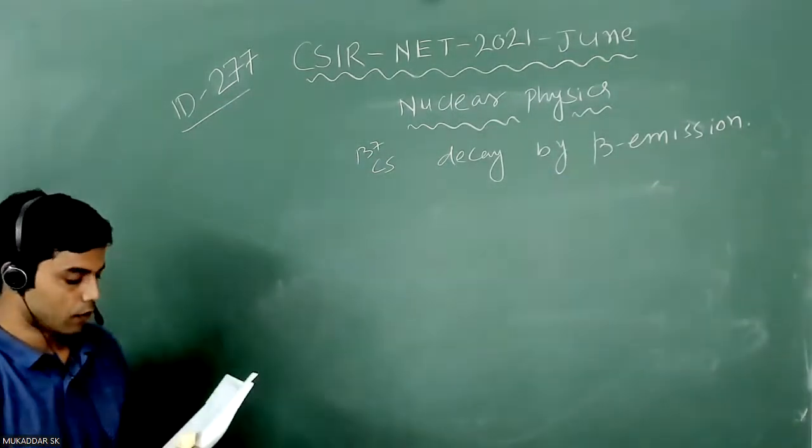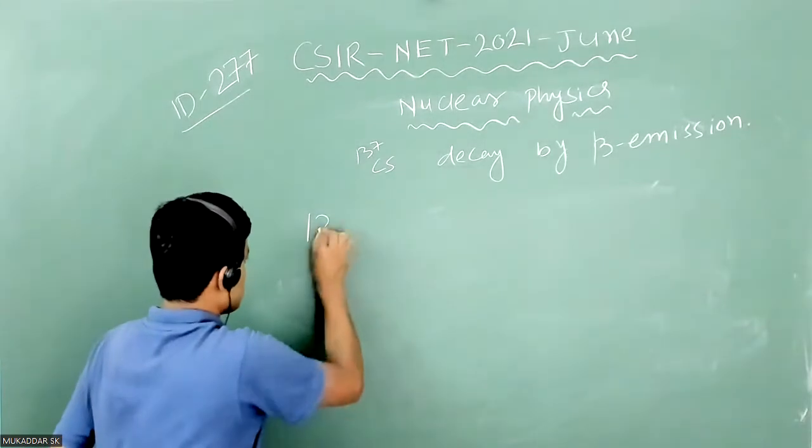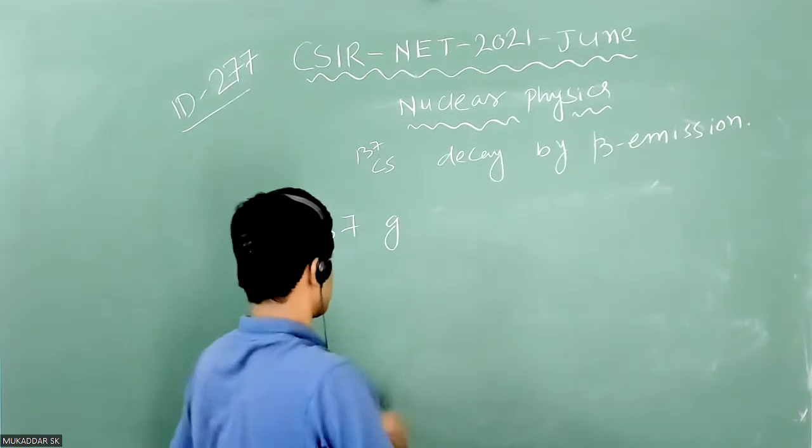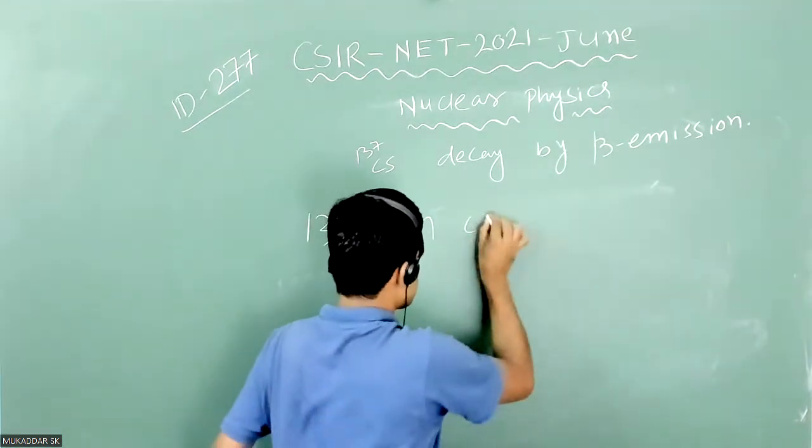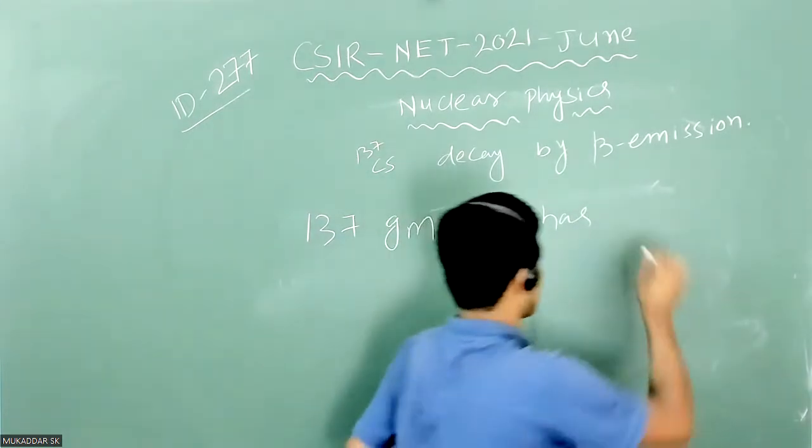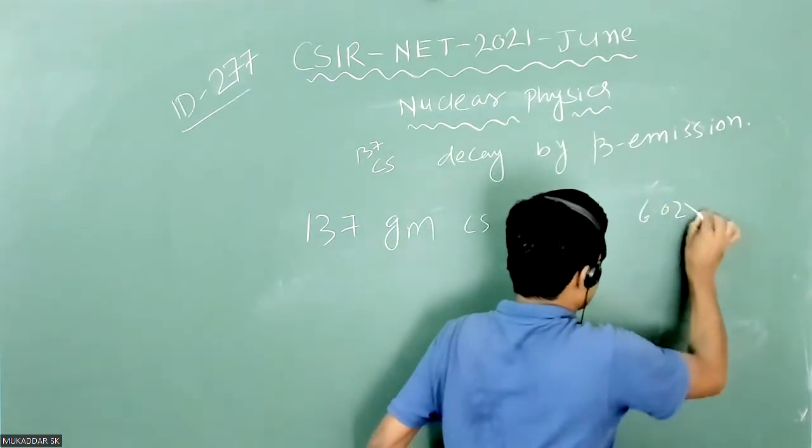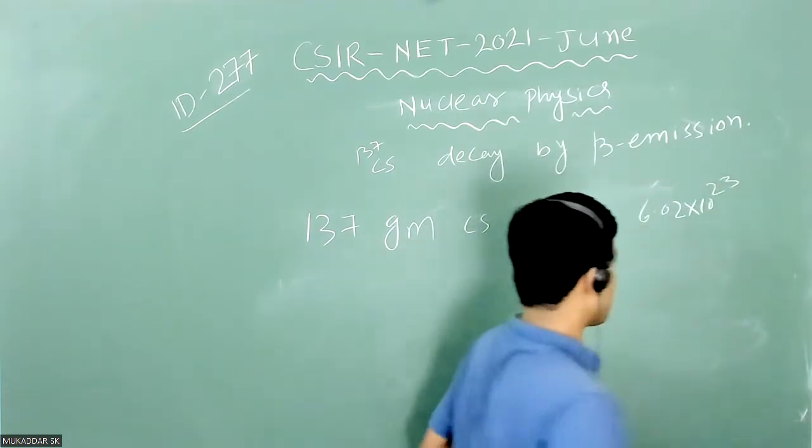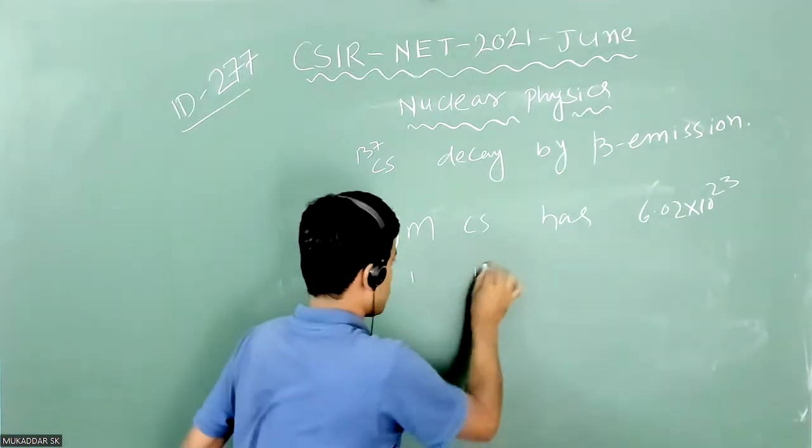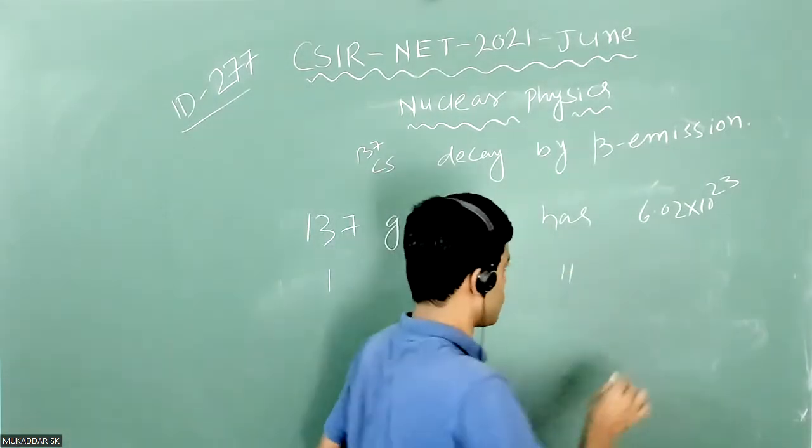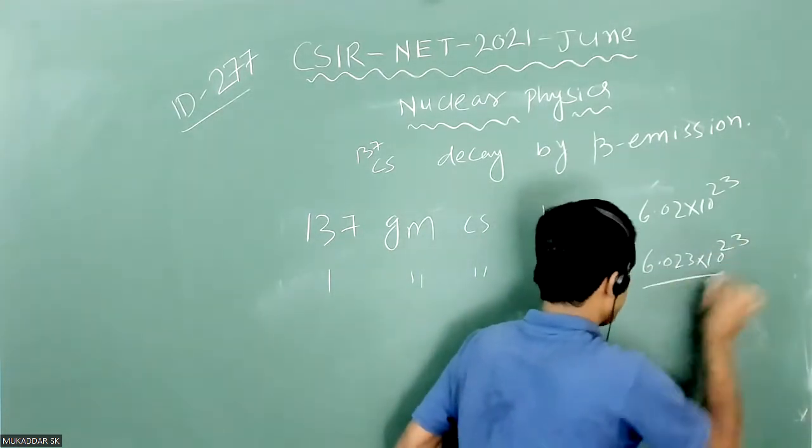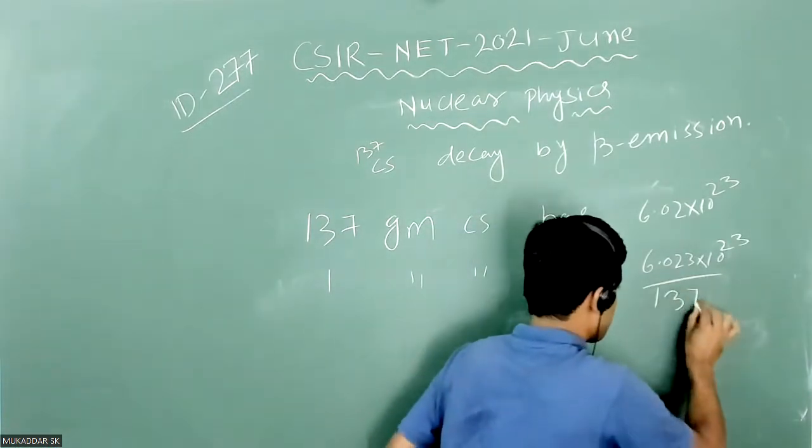We know 137 gram cesium has 6.023×10²³ nuclei. Then 1 gram cesium will have 6.023×10²³ divided by 137 nuclei.